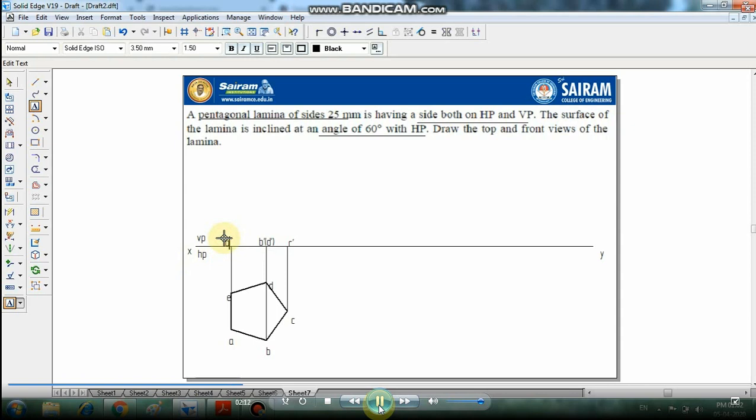Draw this and make it 0.5 mm thickness. Now, the lamina is inclined at an angle 60 degrees with HP, so select the front view, make a copy and move it here.